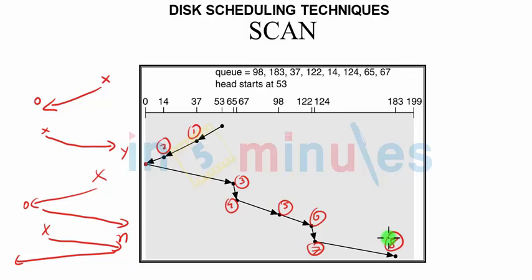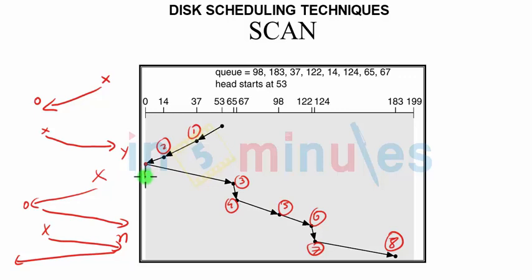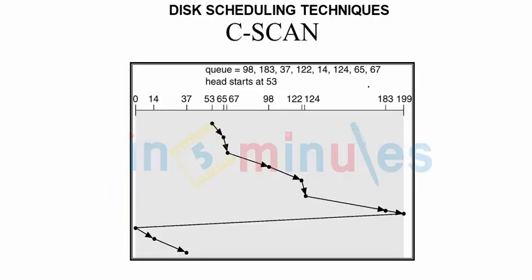A variation to this is circular scan. As you have seen in SCAN, it went till 0 and then took the other side. In circular scan, instead of going to 0 and then going in the next direction, it simply rotates. We should remember that the disk which we are dealing with is circular in nature.